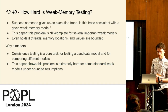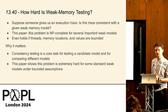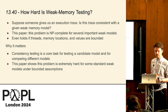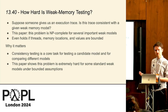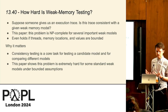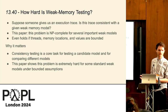The first paper is about reasoning about weak memory testing. Suppose someone gives us an execution trace — is the trace consistent with the weak memory model? It turns out this problem is NP-complete for several real memory models, including the C memory model. This holds even under quite conservative assumptions that threads, memory locations, and values are bounded. This means that this kind of task is very hard for certain memory model structures, and it impacts how we think about testing.